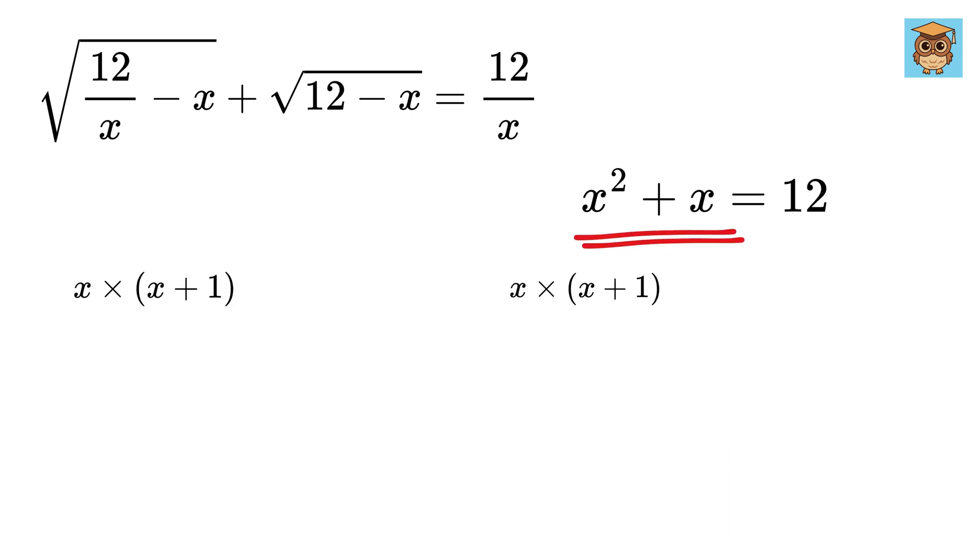This will be x times x plus 1 equals 3 times 4, or negative 4 times negative 3. So, this gives x equals 3, or x equals negative 4.